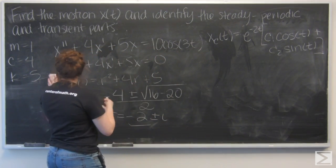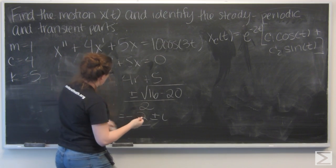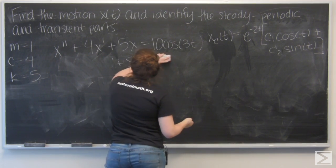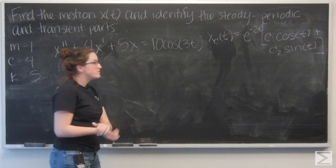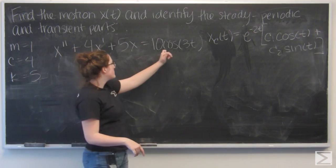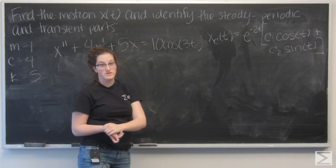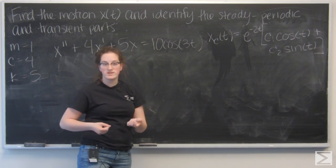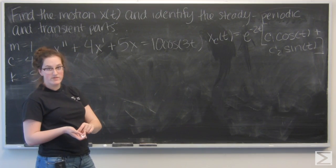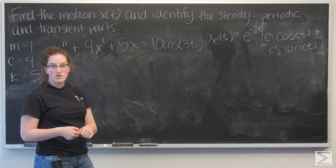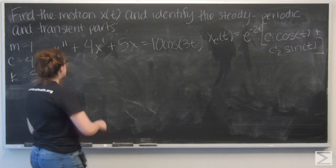Let me make a little bit more room. And I want to find the particular solution. Well, I know I have a 10 cosine of 3t as my forcing function. So I'm going to say that my particular solution is a linear combination of sine of 3t and cosine of 3t. And I'm going to use undetermined coefficients to find out exactly what that linear combination is.